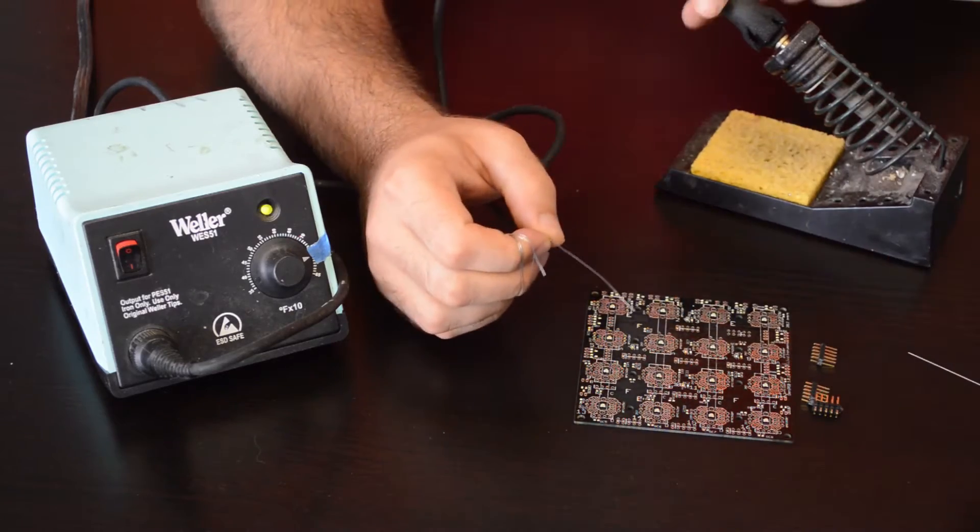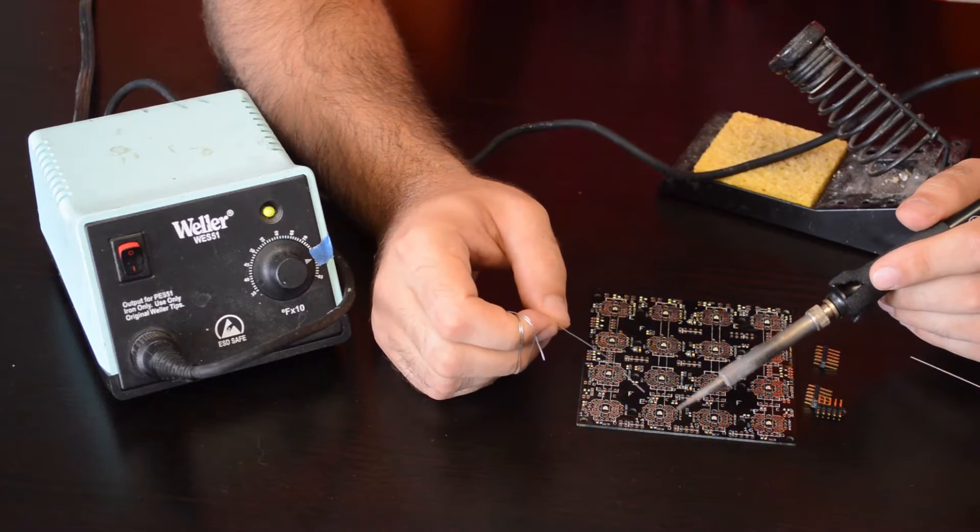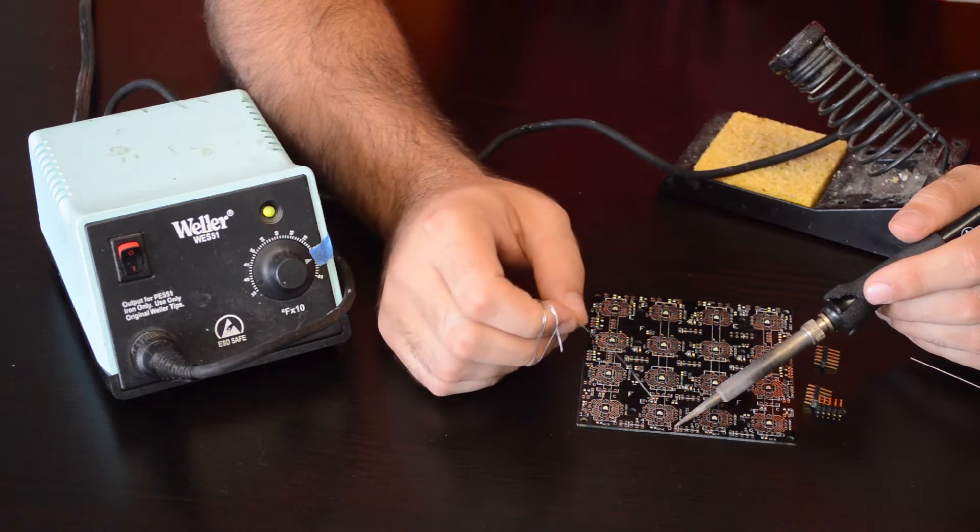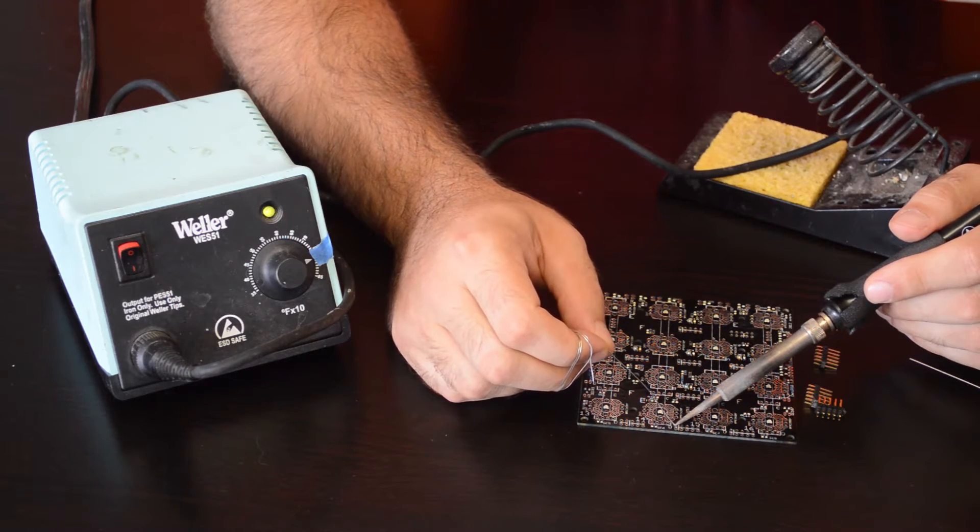And my trick to pin headers is to start off by putting a little bit of solder into one hole. So the first thing you do is touch the pad where you want to solder, get it hot, and then add some solder to it.